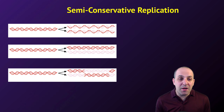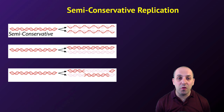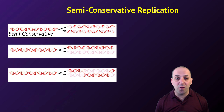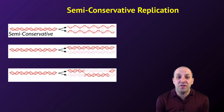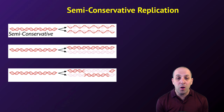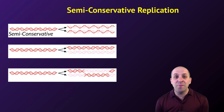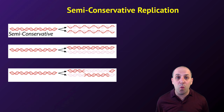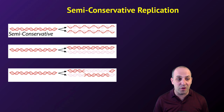Here are the three major models. In the semi-conservative model, each strand of the original DNA molecule serves as the template for the production of an entirely new strand. So each molecule that's made is made out of one totally new strand and one of the old, pre-existing strands.